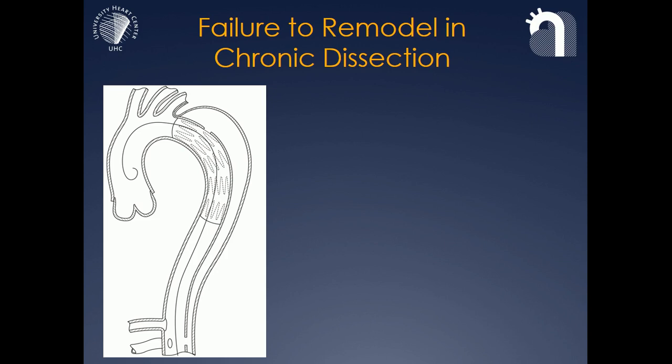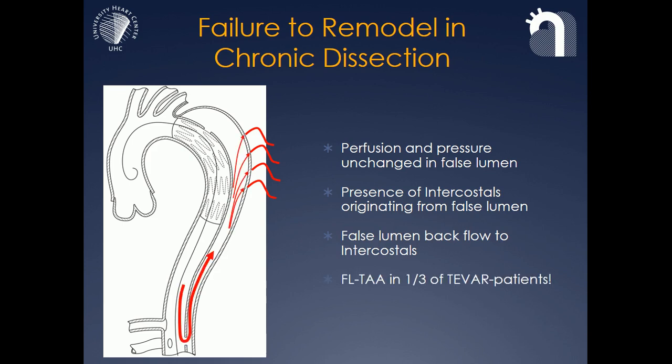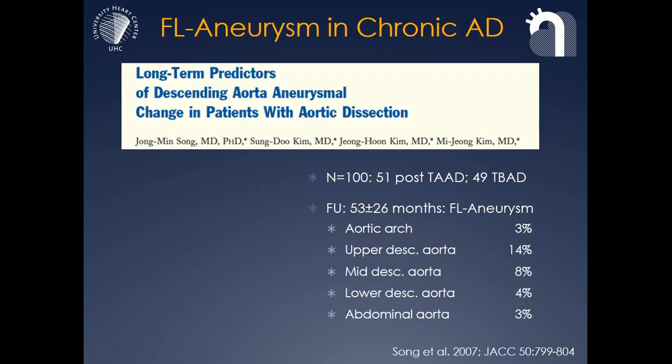The reason why the aorta, despite coverage of the proximal entry tears, failed to remodel is that the perfusion and the pressure keeps unchanged in the false lumen, sometimes maybe even higher. The reason for that is that there are intercostals or bronchial arteries that arise from the false lumen, that are fed by further distal entry tears, creating this upwards flow in the false lumen.